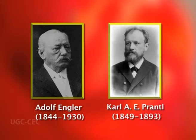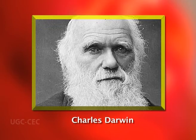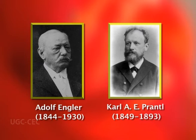Adolf Engler and Karl Prantl of Germany published an evolutionary system in their monograph 'Die Natürlichen Pflanzenfamilien.' Their classification is based on evolutionary sequence as well as genetic relationships among different groups of plants. It employs as many taxonomic characters as possible. Charles Darwin's concept of the origin of species gave enough stimulus for the creation of this evolutionary system of classification.